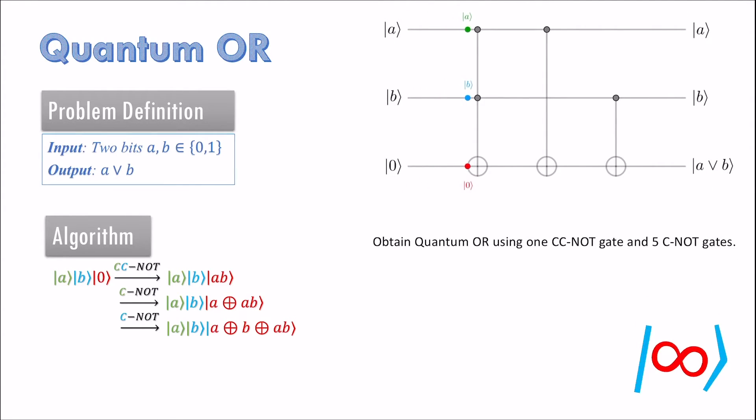It is possible to obtain this output using 5 NOT gates and 1 CC NOT gate. I leave that as something for you to figure out. Is it possible to obtain quantum OR using fewer than 3 gates as I have obtained?